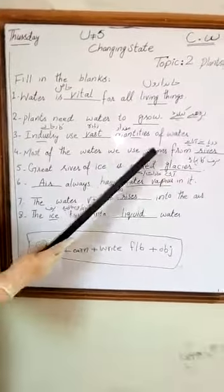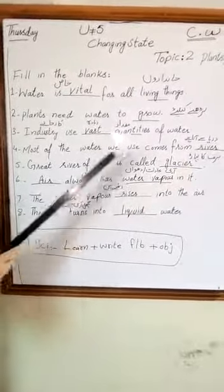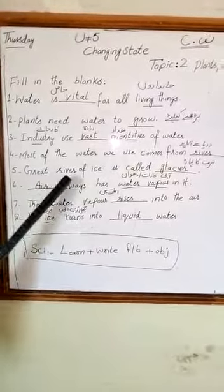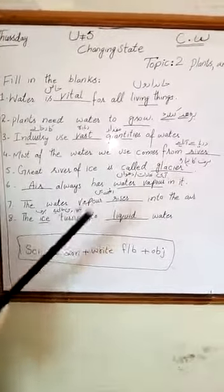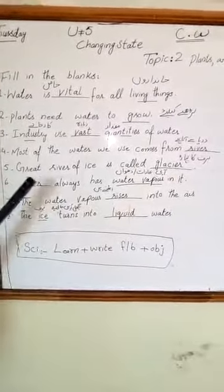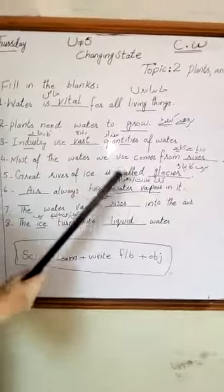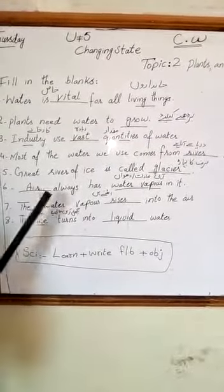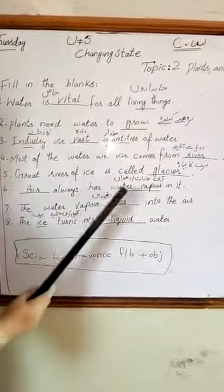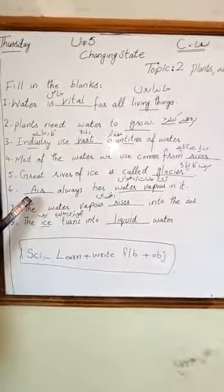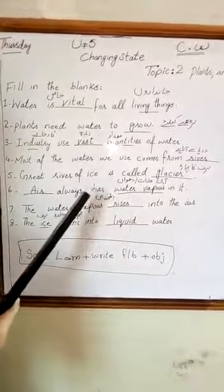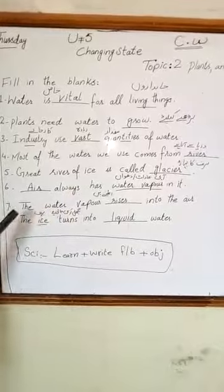Number 4: Most of the water we use comes from rivers. Zahadha taani jahatane ke zhrohti hai. Number 5: Great rivers of ice are called glaciers. Barth ke jo bharani ke zhrohti hai, itko barth ke pahaan kati hai. Number 6: Air always has water vapors in it. Air pe jo hai api ko bharat yani dhuma mojur dhulta hai.